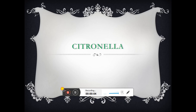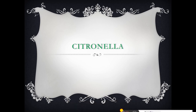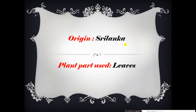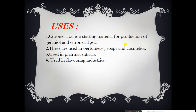Welcome, I am Sandeep Vidate. Today we discuss information about cultivation of citronella grass. The botanical name of citronella grass is Cymbopogon winterianus. Its family is Gramineae, origin is Sri Lanka, and the plant part used is its leaves.